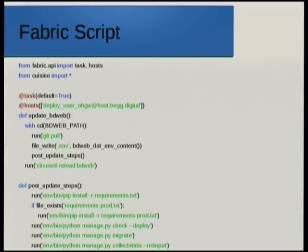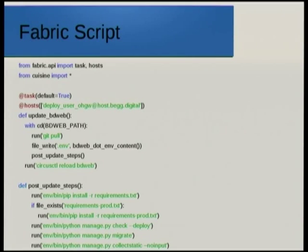The Circus reload works in a really neat way. If I have two processes set up in Circus for bdweb, it will start a new one, terminate the oldest one, start up another new one, and then terminate the next oldest one. So without interruption, keeping at least two running at any one time, it provides continuous service — zero downtime updates. This works as long as the old version still works when migrations have been applied.